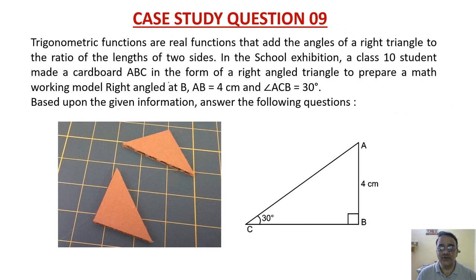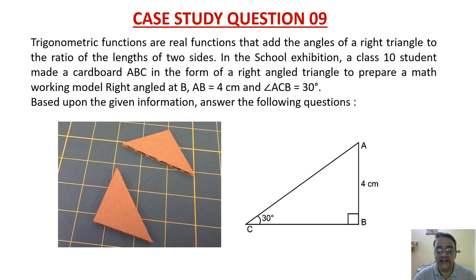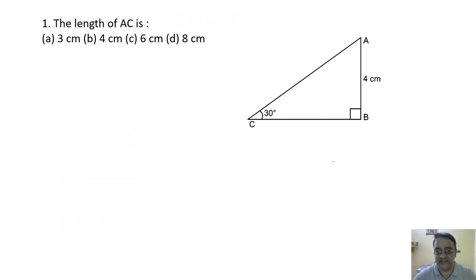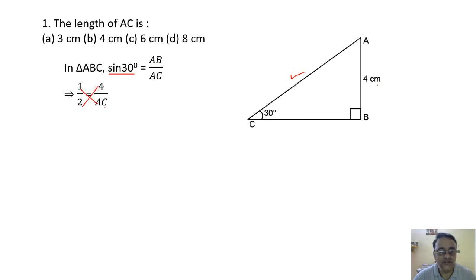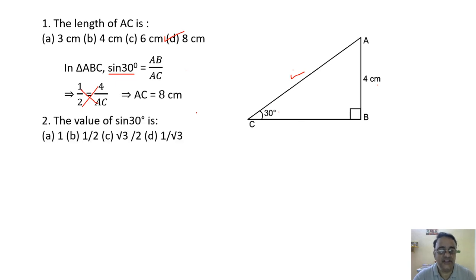Case study question 9: A class 10 student made a cardboard right triangle ABC with right angle at B, AB = 4 cm, and angle ACB = 30°. Question 1: Find AC. Using sin 30° = AB/AC: 1/2 = 4/AC. Cross multiplying gives AC = 8 cm. The correct option is option D.